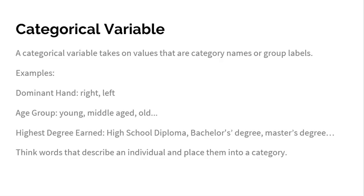No one's ever going to try to trick you with numbers that are actually categorical, but just keep in mind that zip code is a number. Your zip code is actually just putting you into a category of where you live so that the post office knows where to send your mail. So for the large majority for this course, just think words that describe an individual, categorical variable.